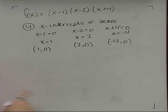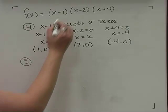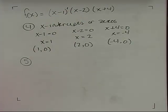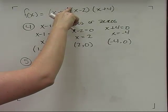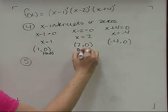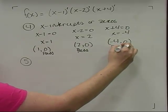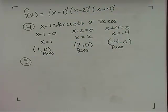At those zeros, I need to figure out the behavior — that's step 5. I look at the multiplicity of each zero, which is the degree of each factor. Since no exponents are written, each factor has degree 1. When the multiplicity is odd, the graph passes through the zero. All three zeros here have multiplicity 1 (odd), so the graph passes through all of them. If the degree were 2, 4, 6, or 8, the graph would bounce instead of pass through.